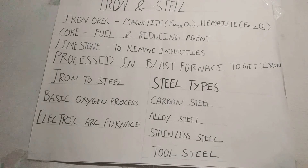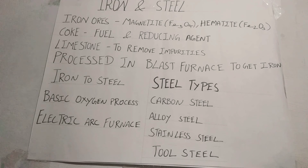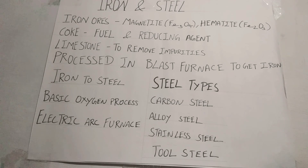Carbon steel is categorized according to percentage of carbon. Alloy steel has metals such as nickel, tungsten, and copper added to get desired metallic properties. Stainless steel is an alloy of chromium and steel. Tool steel is used in making tools and dies, composed of carbides, steel, and cobalt, etc.